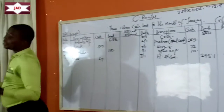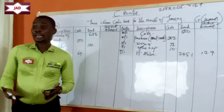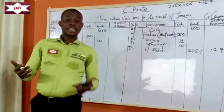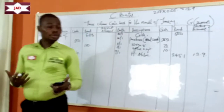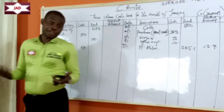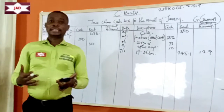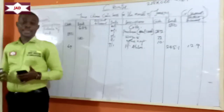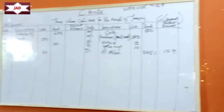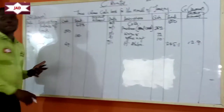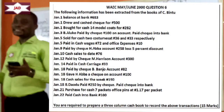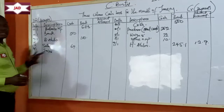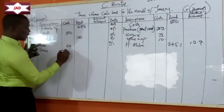It's also possible to interpret this question as the 258 Naira being net of 5% discount, in which case you'd need to work back to get the gross amount. But let's interpret it as the simpler approach: 258 Naira is the balance on account and we're deducting 5% discount. Let's move on. January 10th, cash sales to date: 76 Naira. When you sell, you're receiving money. We record January 10th, sales, in the cash column for 76 Naira.